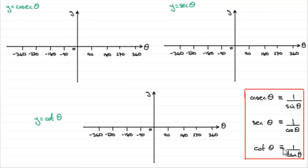You may remember the definitions for cosec, sec, and cot theta. I've just put them down here just in case you've forgotten. Cosec theta is 1 over sine theta, sec theta is 1 over cos theta, and cot theta is 1 over tan theta.